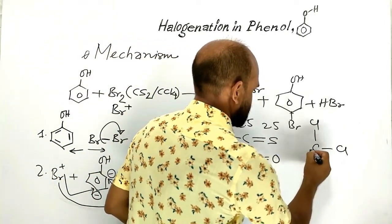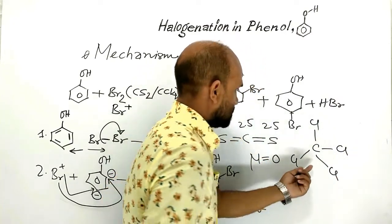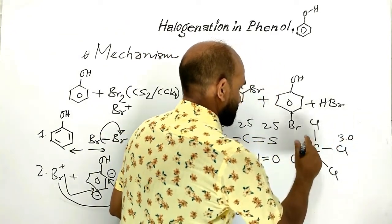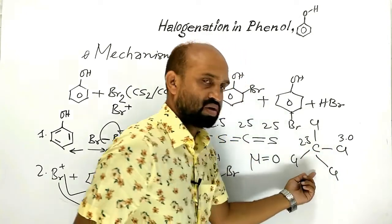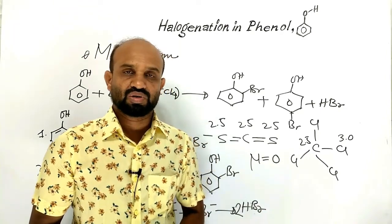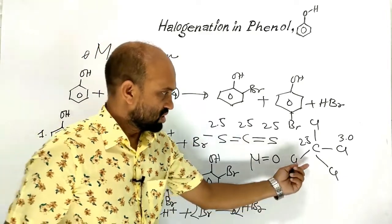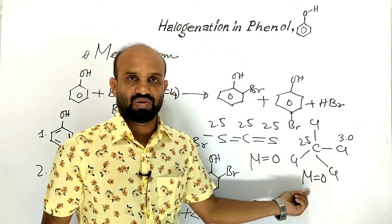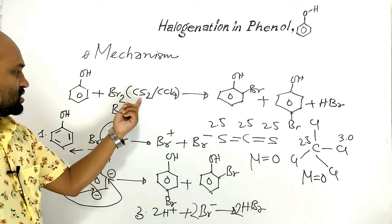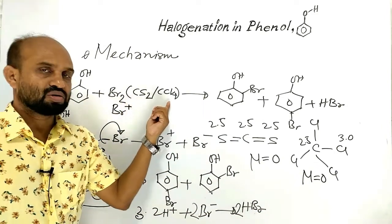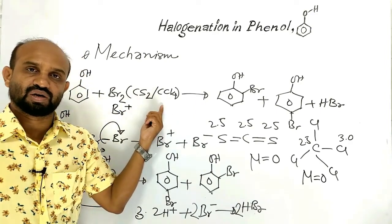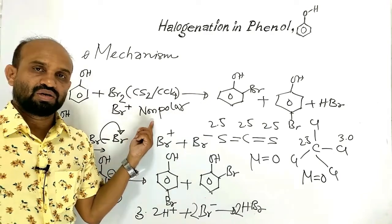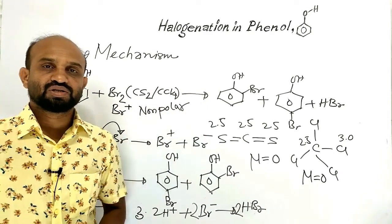Similarly, carbon tetrachloride is also a non-polar molecule. Though the electronegativity of chlorine is 3.0 and carbon is 2.5, so all the C–Cl bonds are polar, but the dipole moments of all bonds cancel each other. So ultimately, the molecule becomes non-polar — its dipole moment is zero. The special characteristic of carbon disulfide and carbon tetrachloride is that these solvents are non-polar, which is the key difference from water.